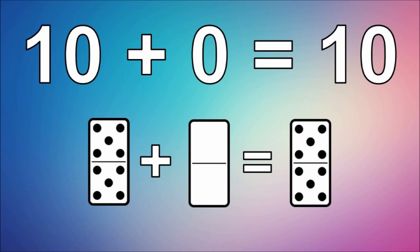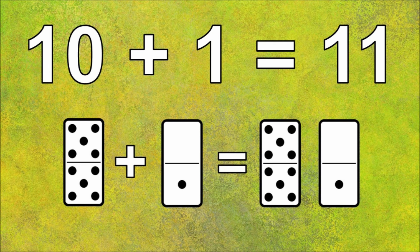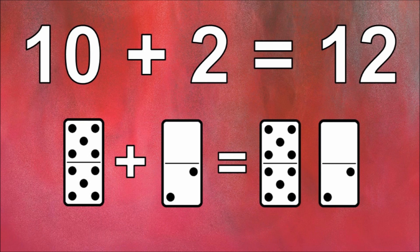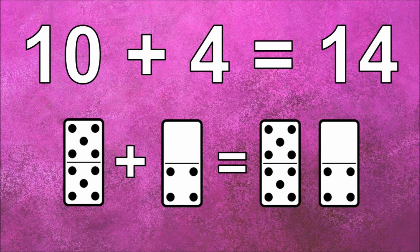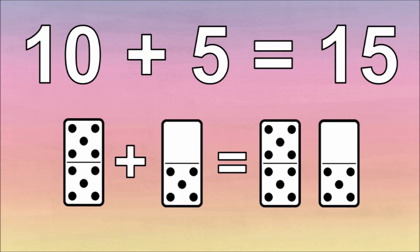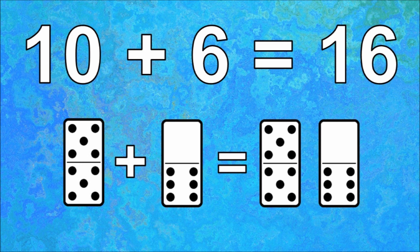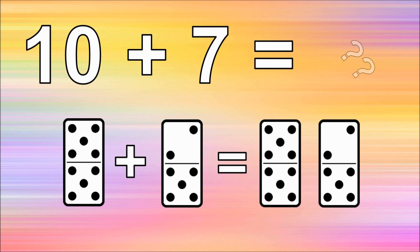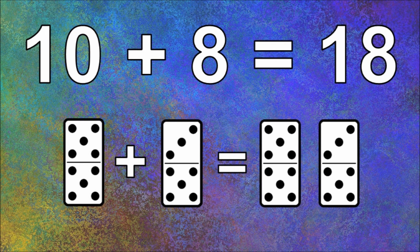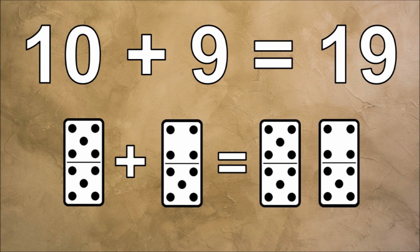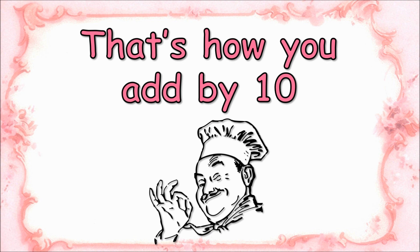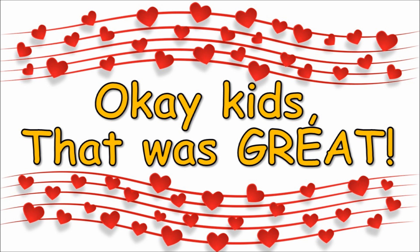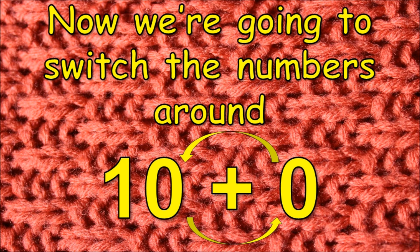Ten plus zero is ten. Ten plus one is eleven. Ten plus two is twelve. Ten plus three is thirteen. Ten plus four is fourteen. Ten plus five is fifteen. Ten plus six is sixteen. Ten plus seven is seventeen. Ten plus eight is eighteen. Ten plus nine is nineteen. Ten plus ten is twenty. That's how you add by ten.